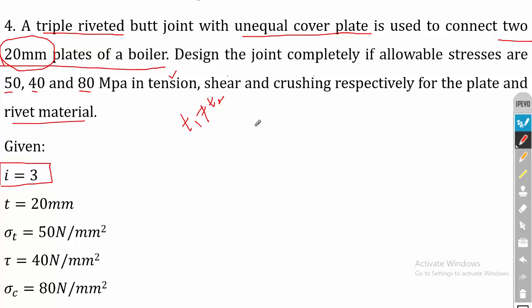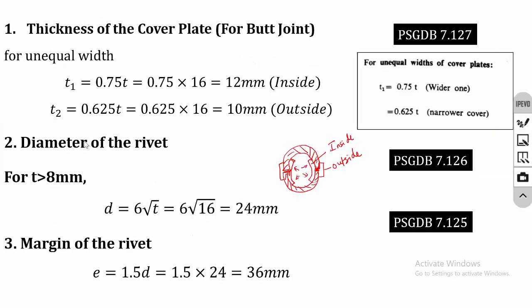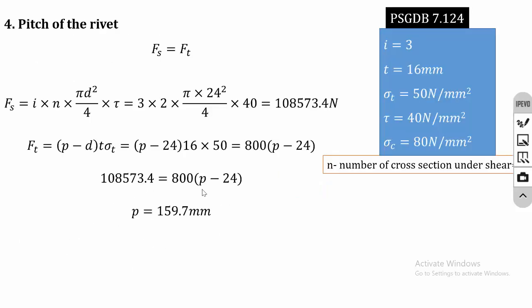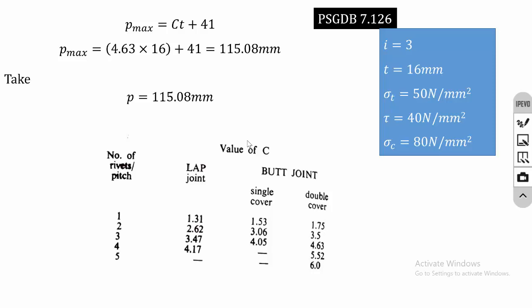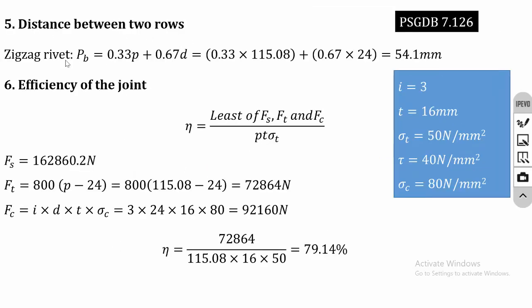The type of riveting (chain or zigzag) is not given, so you can assume either type. Start from the cover plate thickness calculation, then diameter of the rivet — since thickness is greater than 8 mm you can directly use D = 6√T. Then calculate margin, pitch, and remember to check the maximum pitch value. Then calculate the distance between rows and finally the efficiency of the joint.